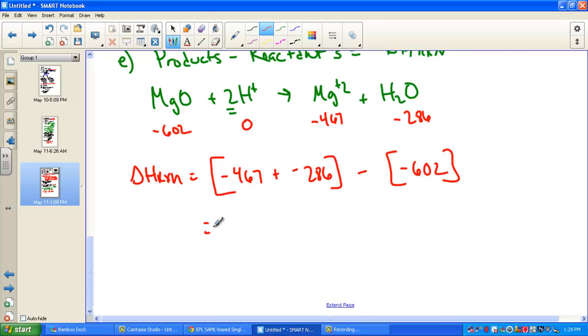Negative 467, plus a negative 286, minus a negative 602. And did you find what I had? Negative 151 kilojoules per mole. The heat of reaction using heats of formation.